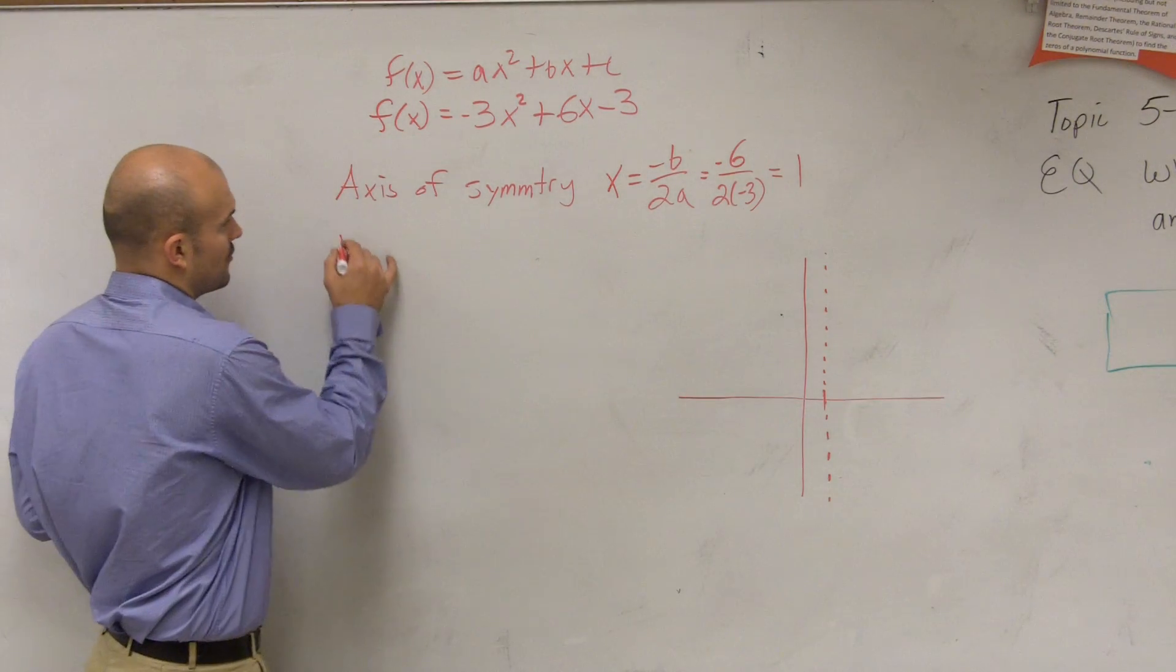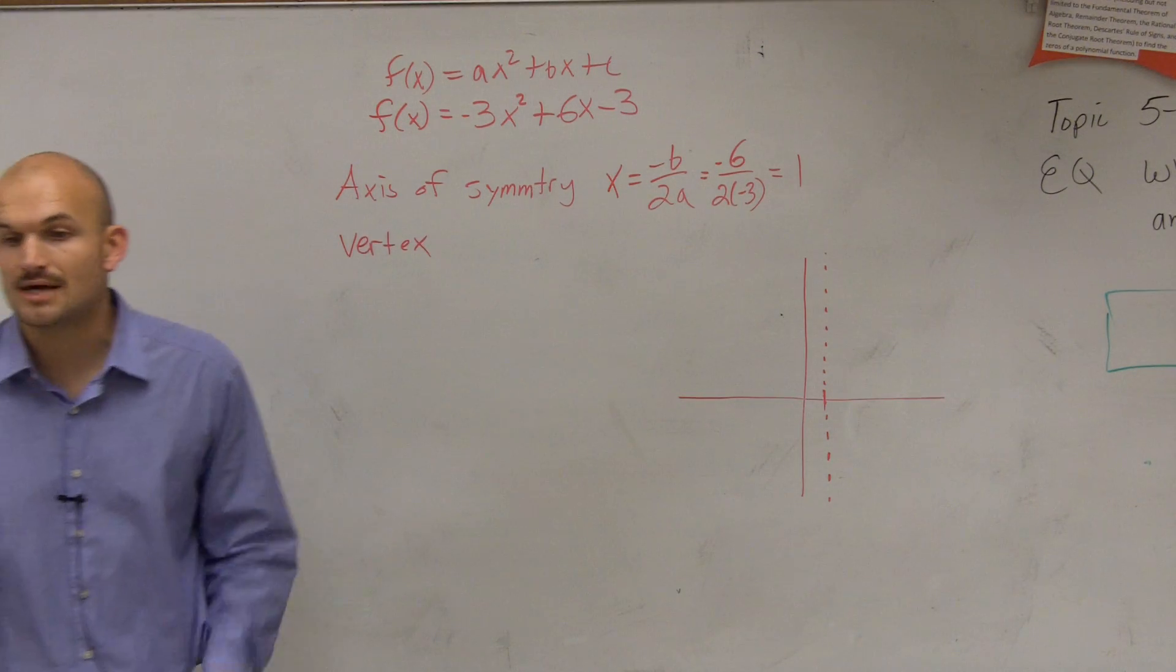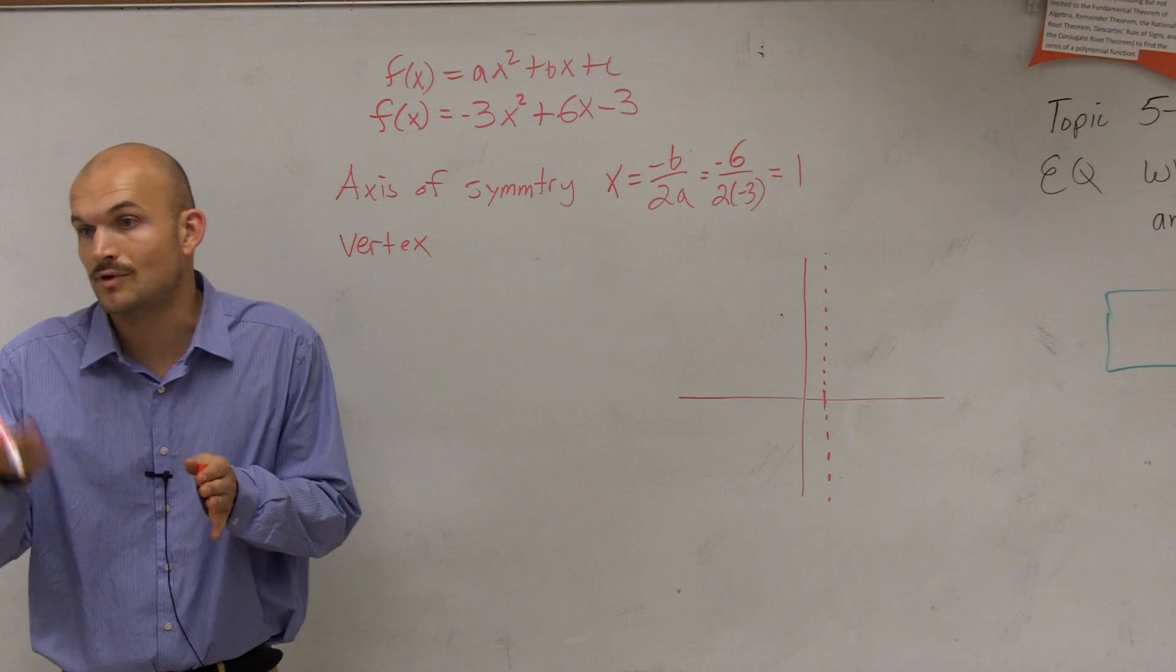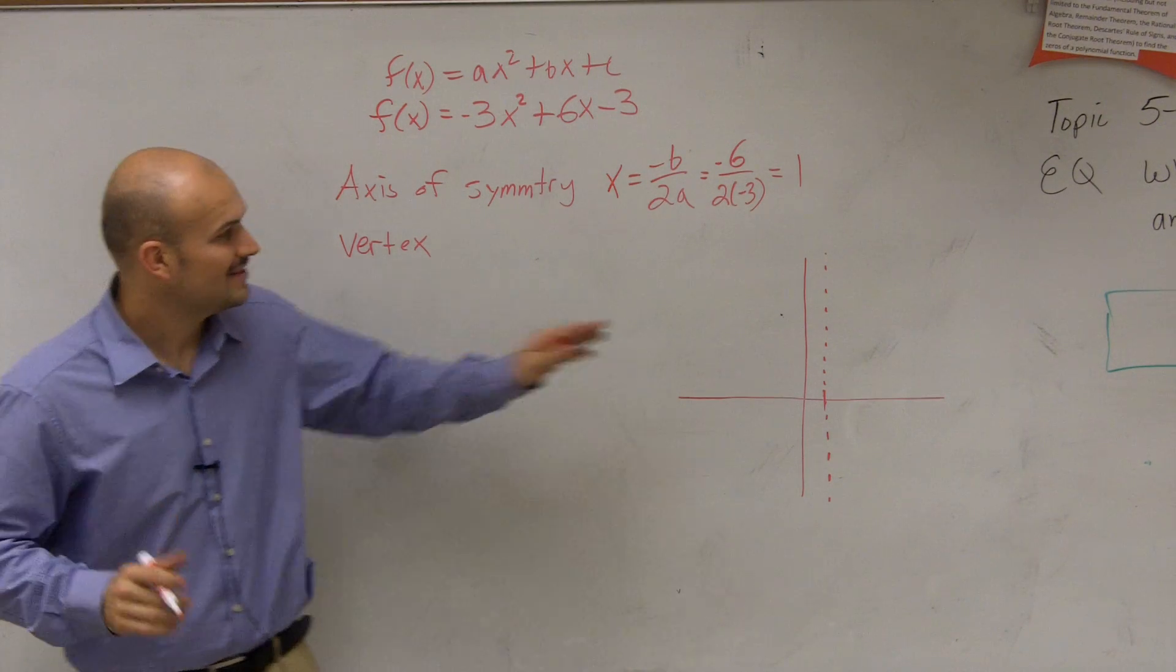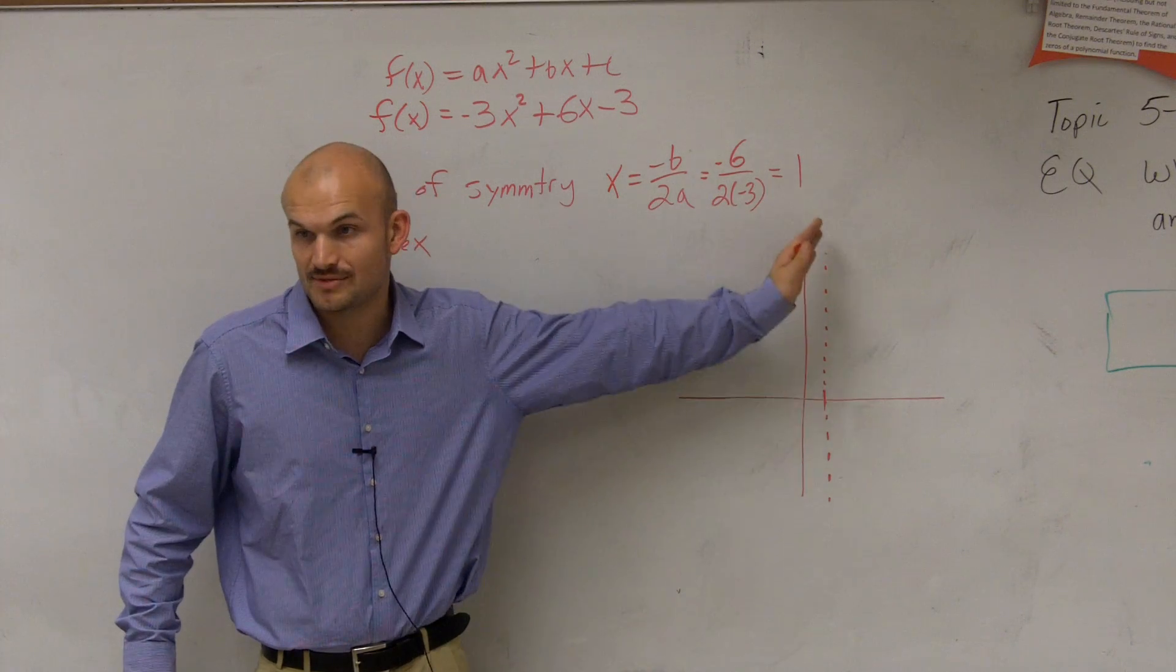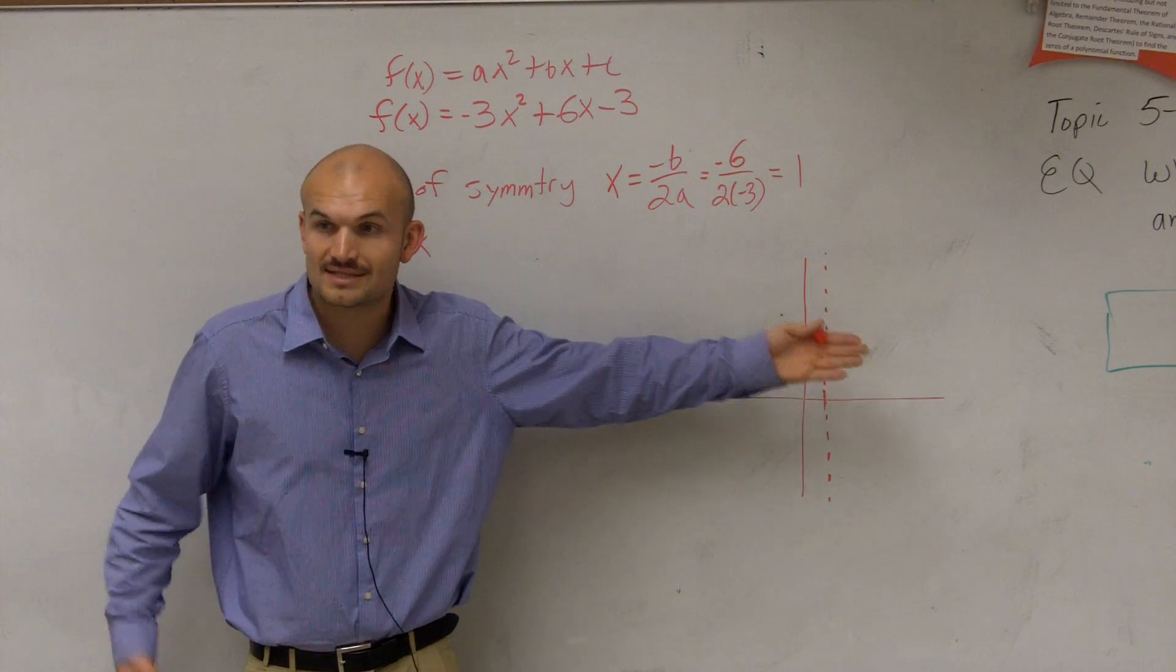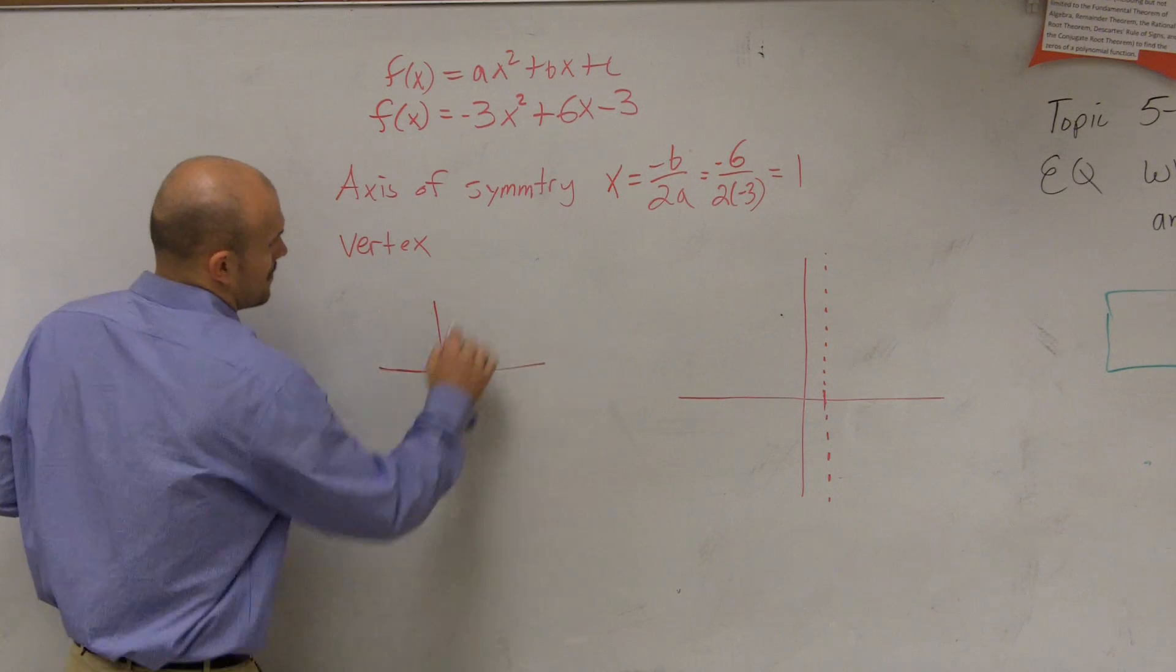Now, the next thing is to ask us for the vertex. Now, remember, the vertex is - the x-coordinate of the vertex is on what line? Well, the vertex is actually always going to be on your axis of symmetry. If you remember, if we looked at graphs...